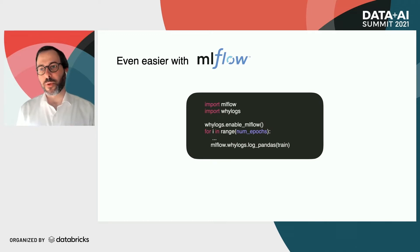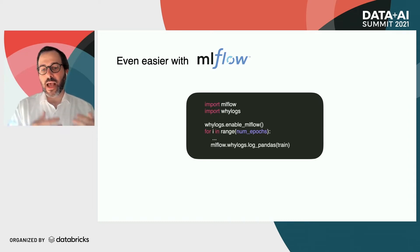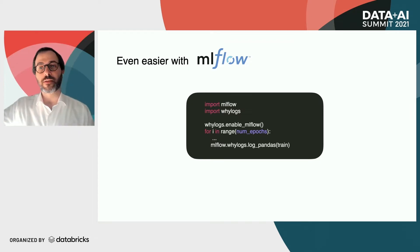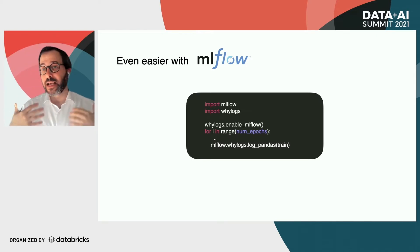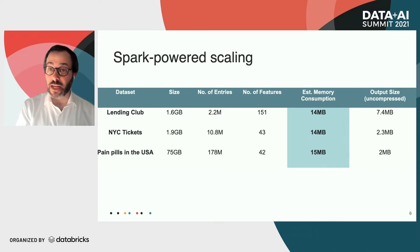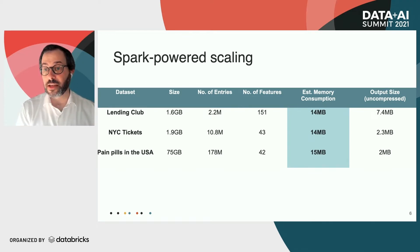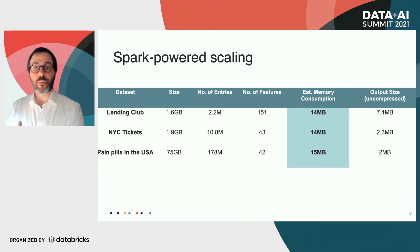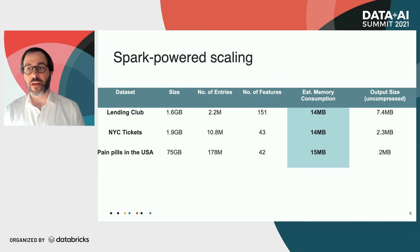It's even easier when you're starting to do experiments. If you're doing experiments with MLflow, you can easily just enable logging with YLogs, which allows you to log that information within your experiments and easily compare between experiments, between your production test set and your deployed dataset that's streaming. These methods are really for real-world size datasets. Even with large datasets like the Lending Club dataset, New York tickets, or the Pintos dataset, the memory consumption is constant because it depends on the number of features you're logging. The output size is also small, and if you want to compress it further to send to a monitoring solution, it requires very low bandwidth.